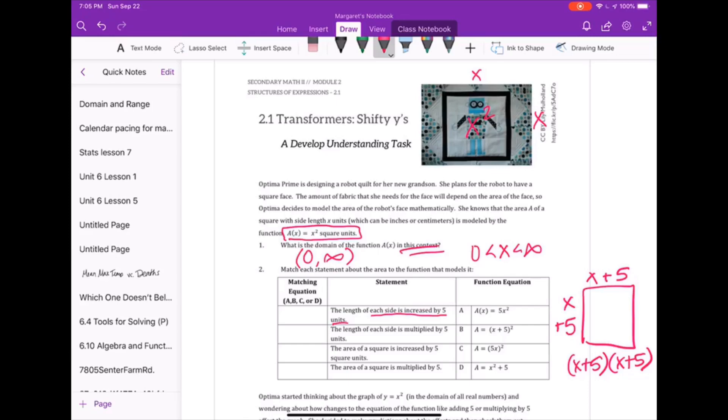Looking at our choices, the closest to that is this x plus 5 squared, because x plus 5 times itself is x plus 5 squared, and what we have here is x plus 5 times x plus 5, which makes sense. We are multiplying it by itself. But if we look at the next situation, we see that the length of each side is now being multiplied by 5 units. So we are going to change this to be x times 5 and x times 5.